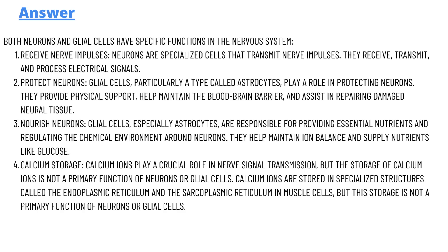We have some explanations over these options. Receive nerve impulses: neurons are specialized cells that transmit nerve impulses. They receive, transmit, and process electrical signals.